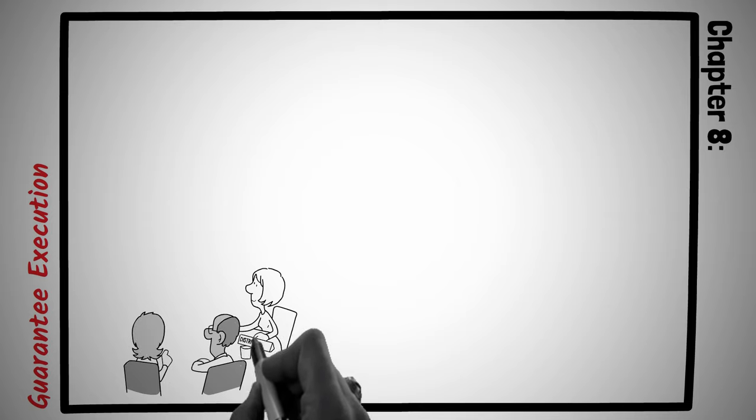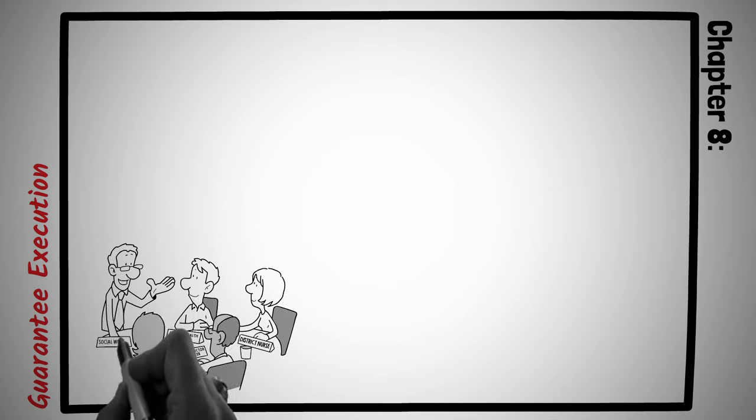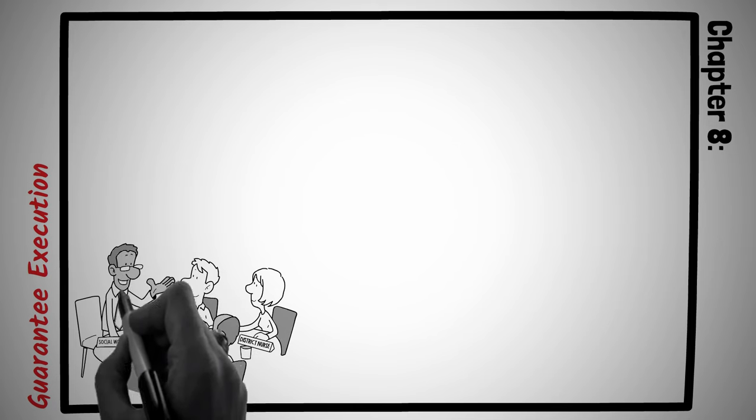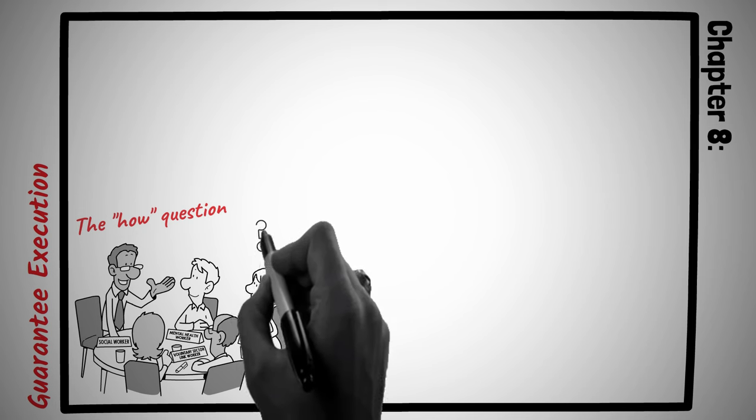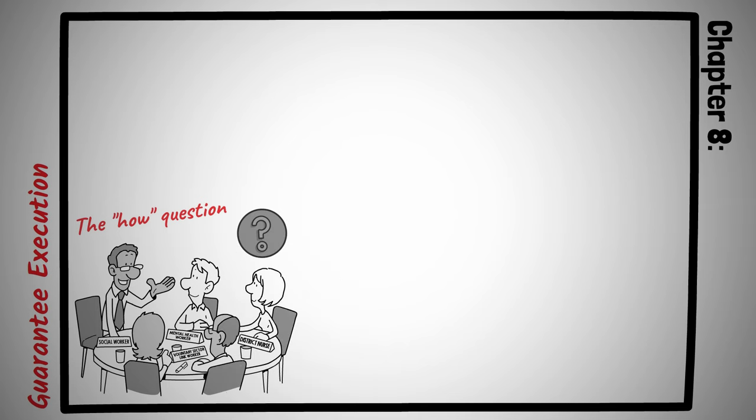Chapter 8. Guarantee Execution. Effective negotiation doesn't conclude with a mere agreement. The real success lies in its execution. The path from an agreement to its actual implementation can be strewn with unforeseen obstacles and misunderstandings. But there's a simple yet potent tool in the negotiator's arsenal that can bridge this gap. The how question. It goes beyond surface-level commitment, compelling the other party to think through and articulate the practical steps for execution, thereby solidifying their commitment.